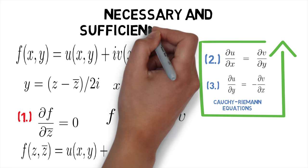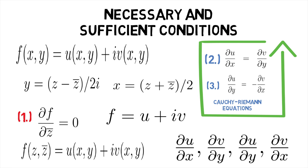The necessary and sufficient conditions however are two in number. First, the four partial derivatives of real and imaginary parts should satisfy the Cauchy-Riemann equations. And second, the four partial derivatives of its real and imaginary parts should be continuous.